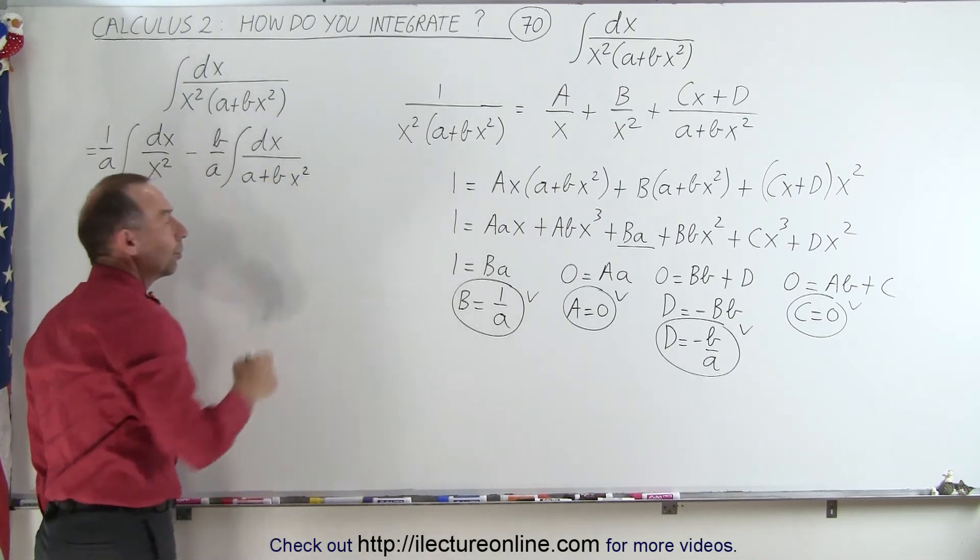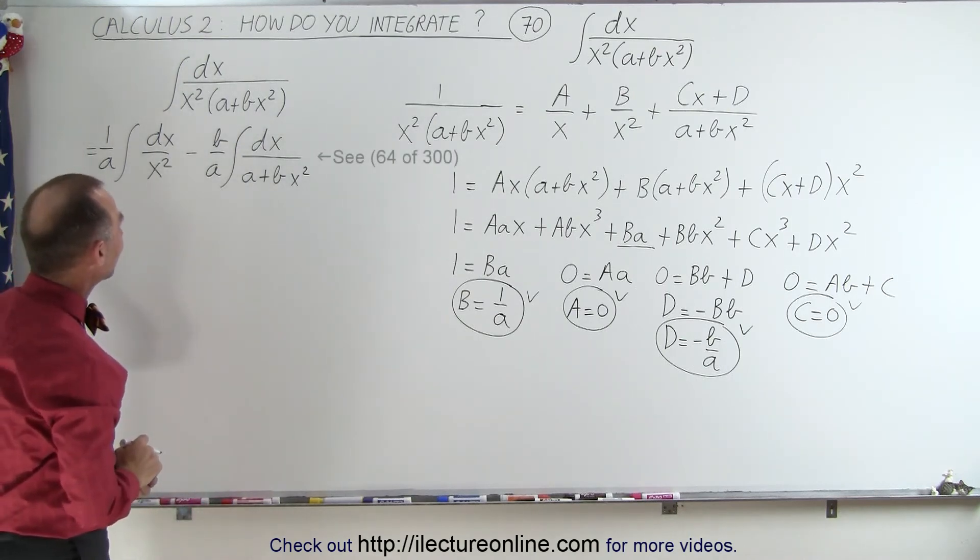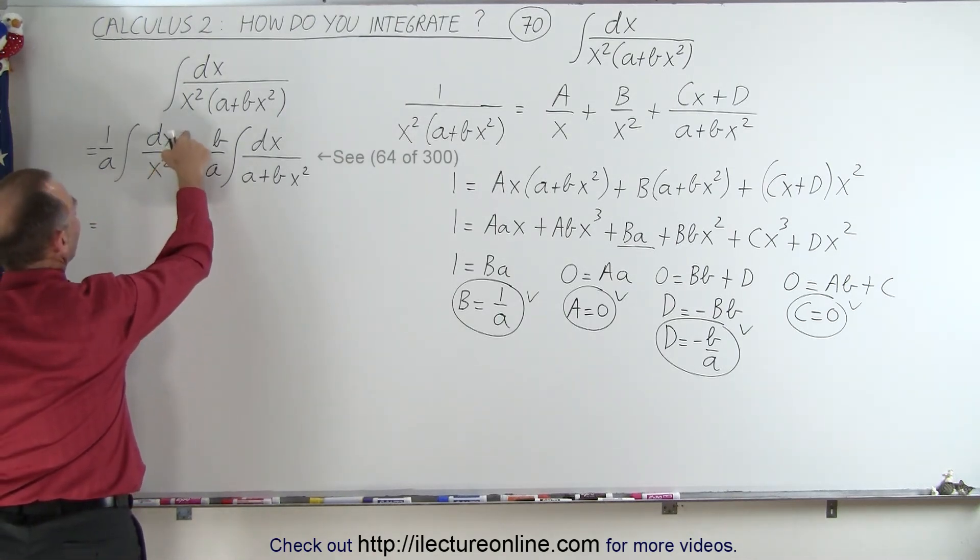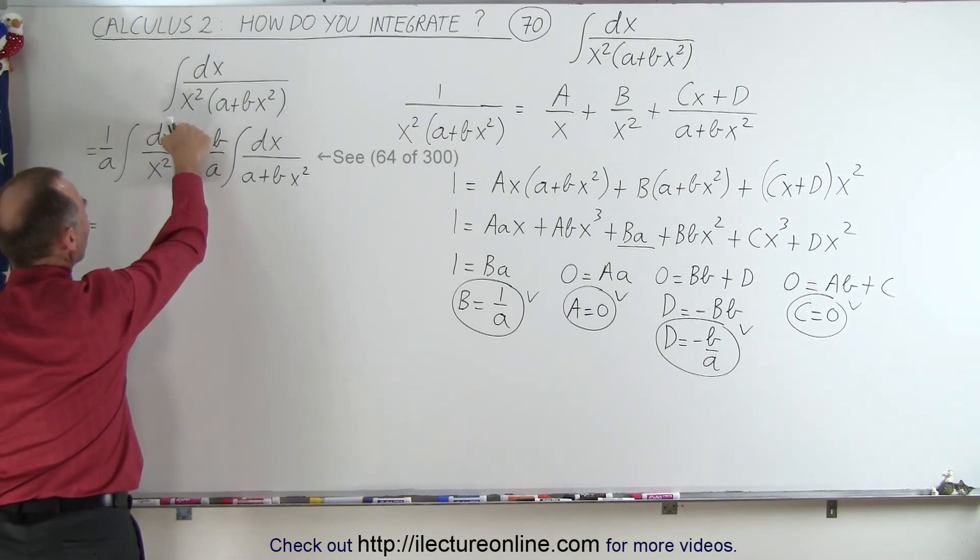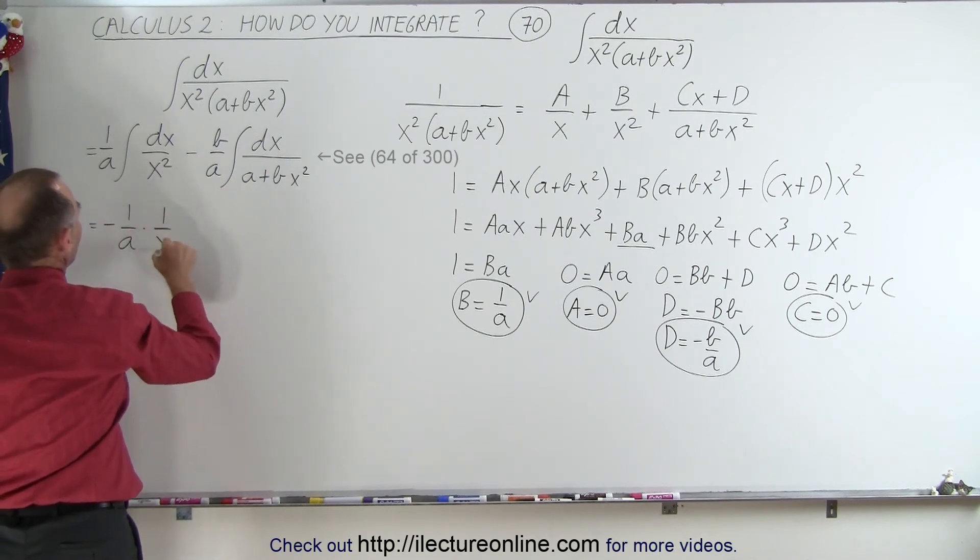And that one, we should remember how to integrate that as well, because we saw that a few videos back. So now we can go ahead and integrate each one of these. So this becomes equal to, this is like x to the minus 2, add one to the exponent, divide by the new exponent, so this becomes minus 1 over a times 1 over x.